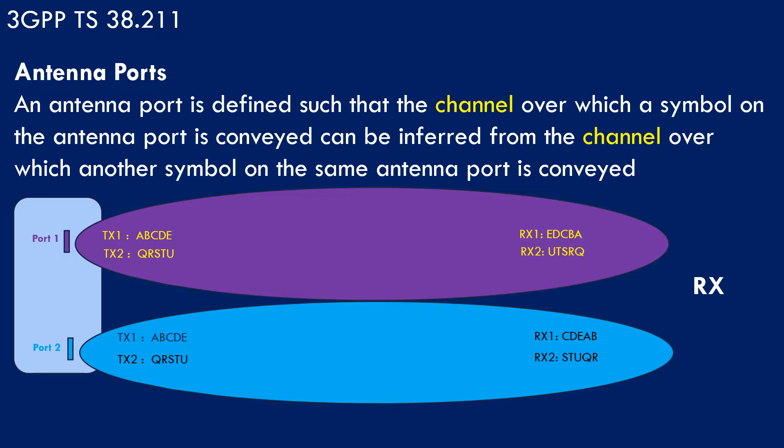So we can say that if a signal is sent over the same antenna port, changes made to that signal by the propagation channel will be the same. Changes made to the same signal if sent via a different port will be different. Now we know what logical antenna ports mean — let us see how this information is useful.